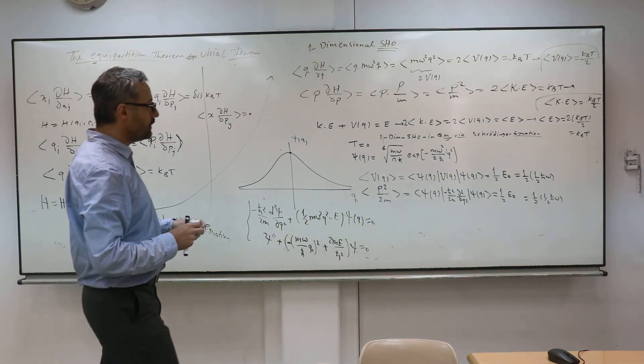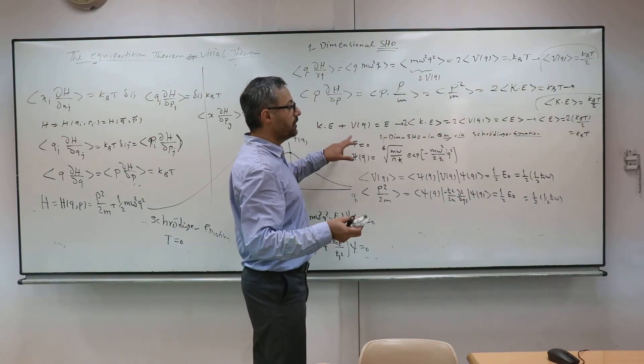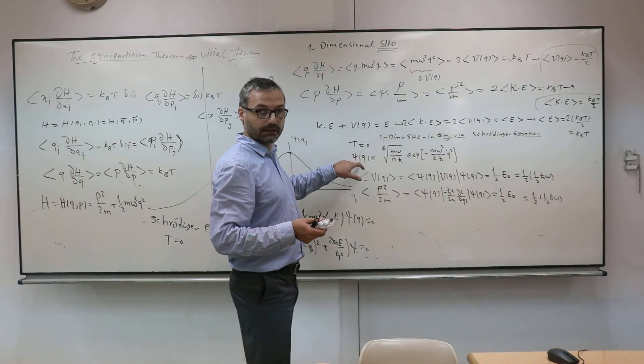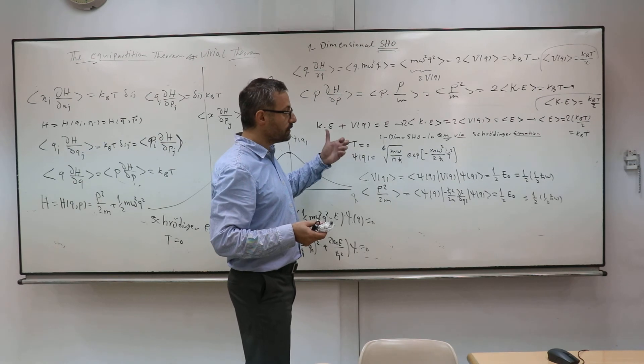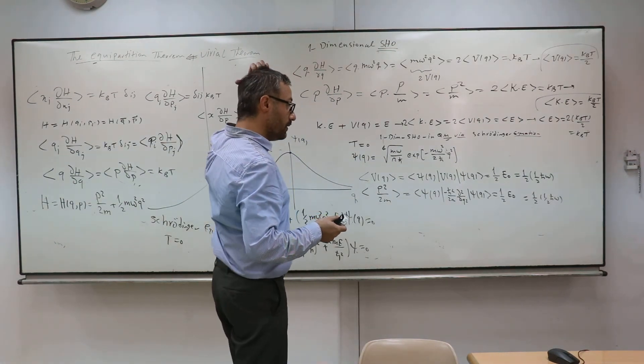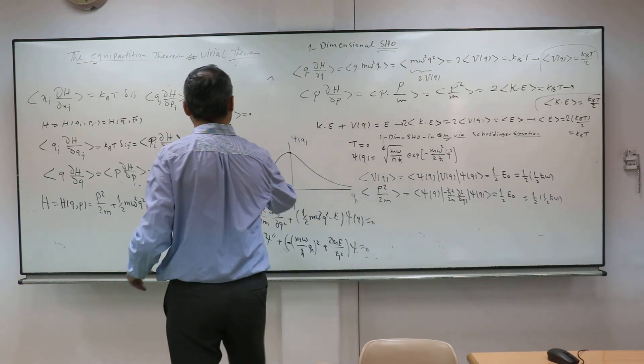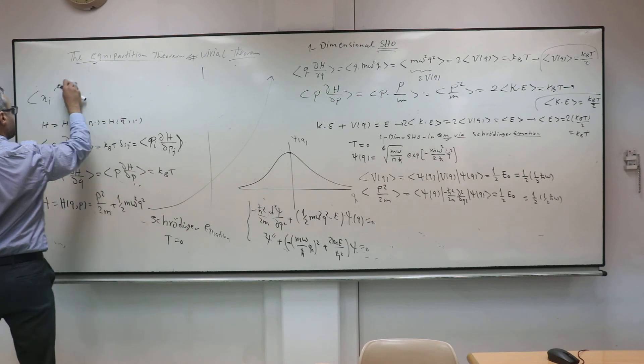So at T=0 you can use the standard quantum mechanics. But at finite T, you have two options. One is that you develop a finite temperature version of the wave function. The other is that you use statistical physics. So the thermal version of the Schrödinger equation exists, but we don't talk about thermal wave functions.